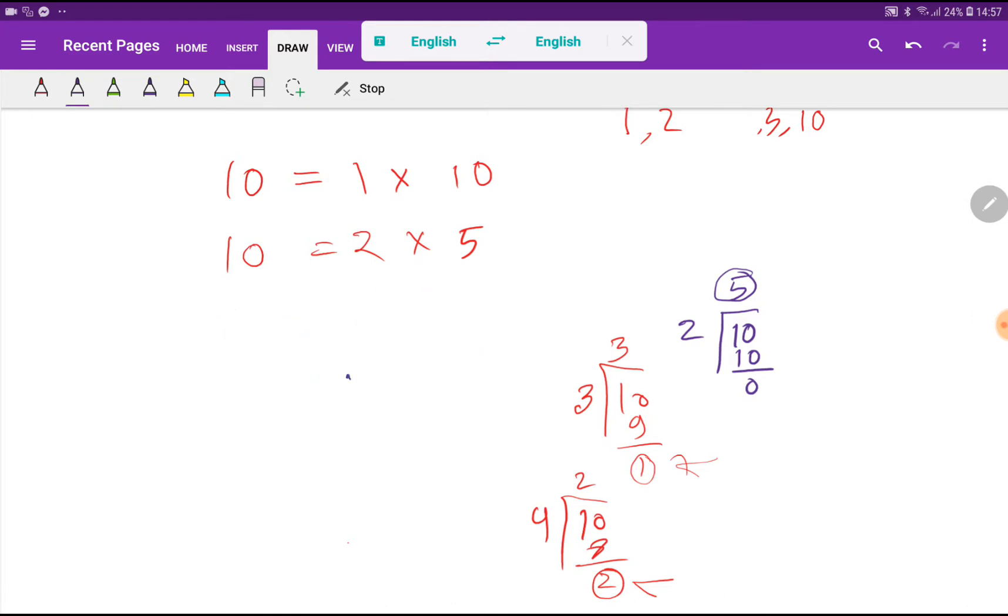If you square 4, then you will get 16, which is greater than 10. This indicates that you should stop the process.